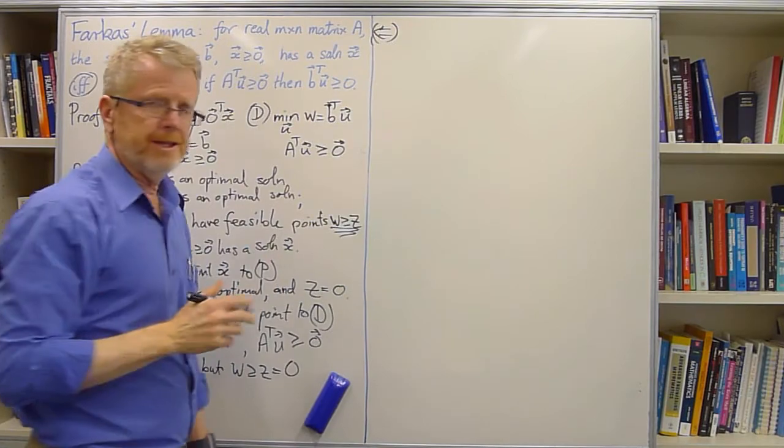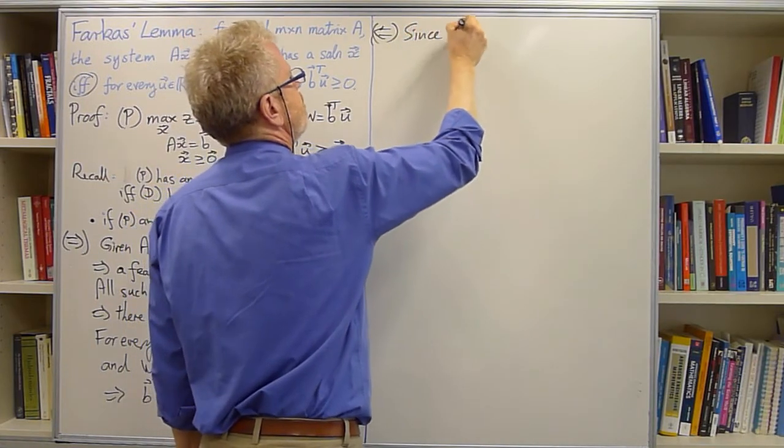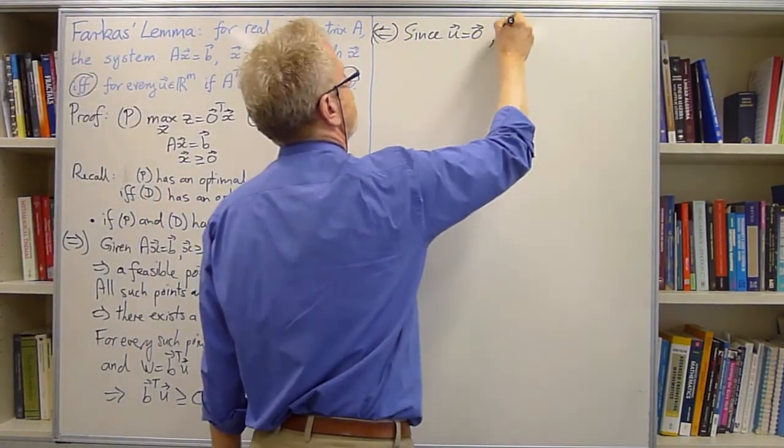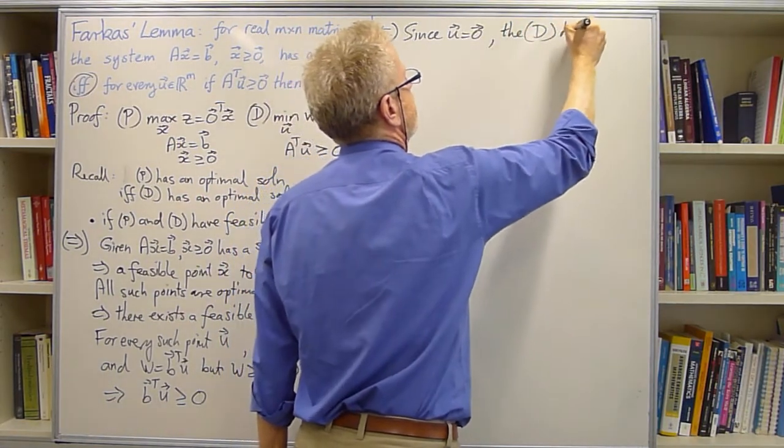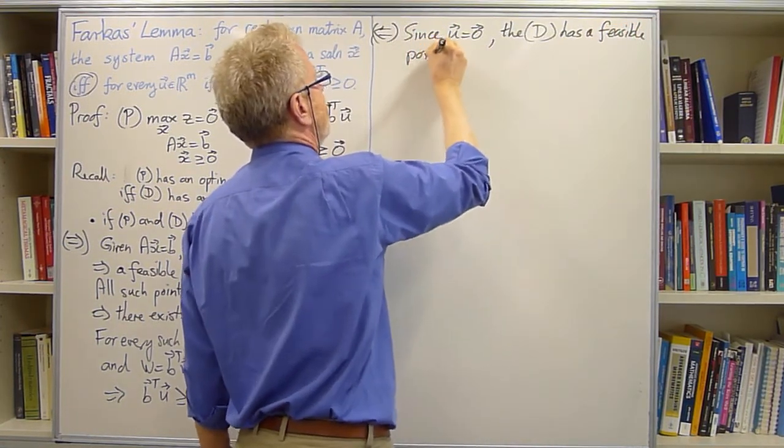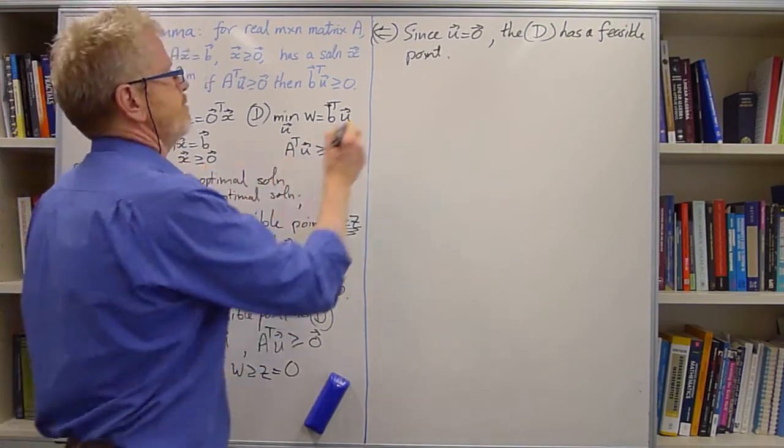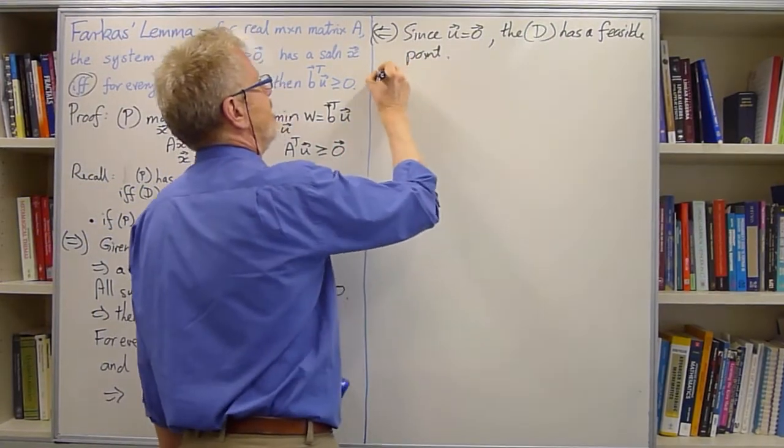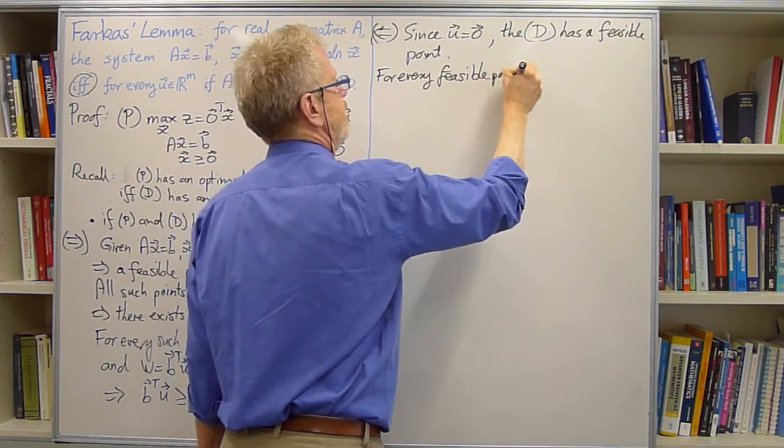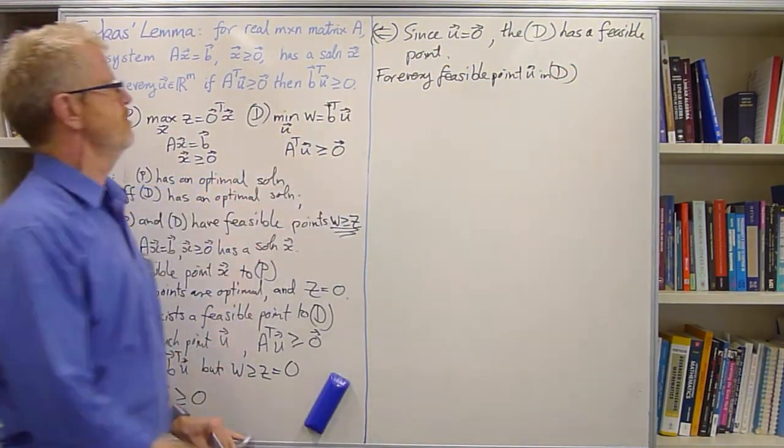Okay, so we'll start doing that with the observation that since U equals 0 satisfies the constraints, the dual, the dual has a feasible point. Namely, at least, U equals 0. Now, so we can talk about feasible points. Right, so now for every feasible point in the dual, we know that A transpose U is bigger than or equal to 0.